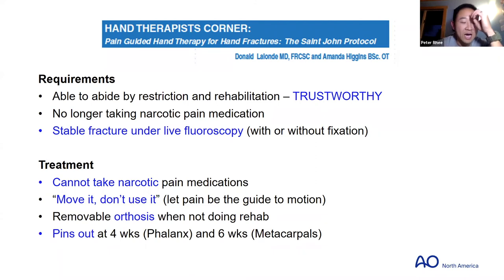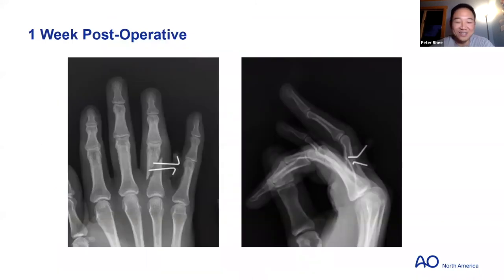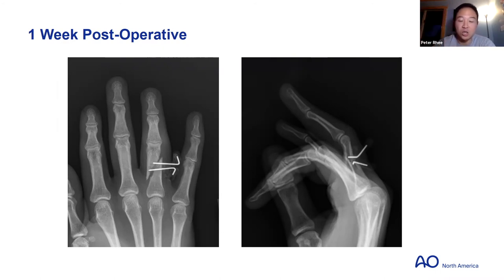To all the hand surgeons out there: please find your therapist and be friends with them — make a partnership. I tell patients that surgery is 10% of it, but your relationship with the therapist and patient effort is about 90% of their recovery. This is especially true with fracture work and tendon work. The surgeon-therapist partnership is fundamental to restoring function for our patients.